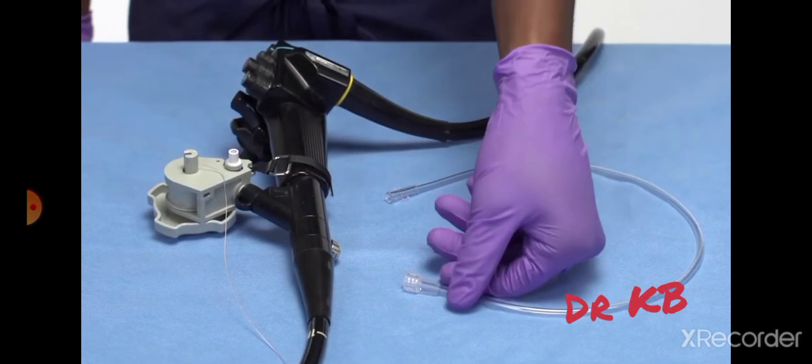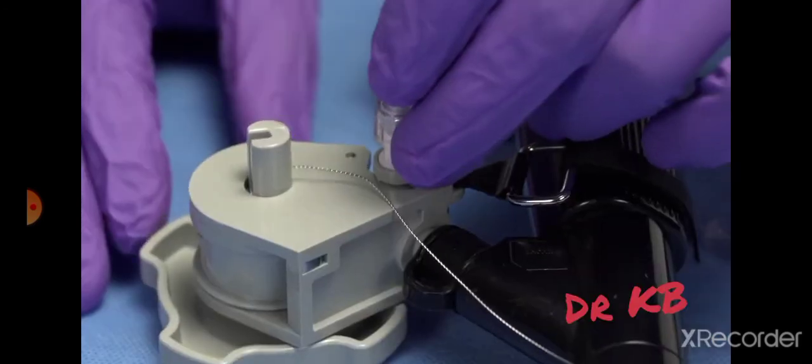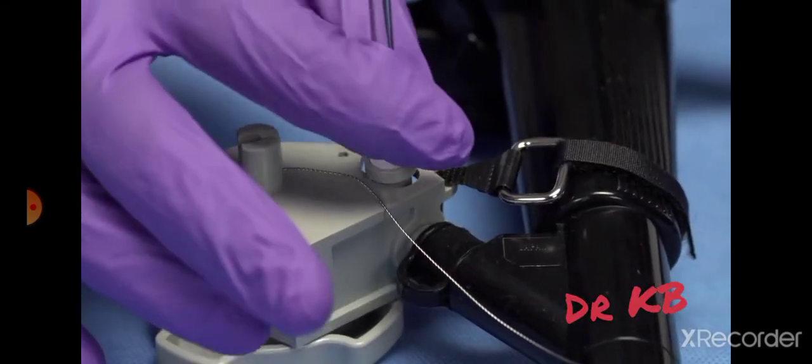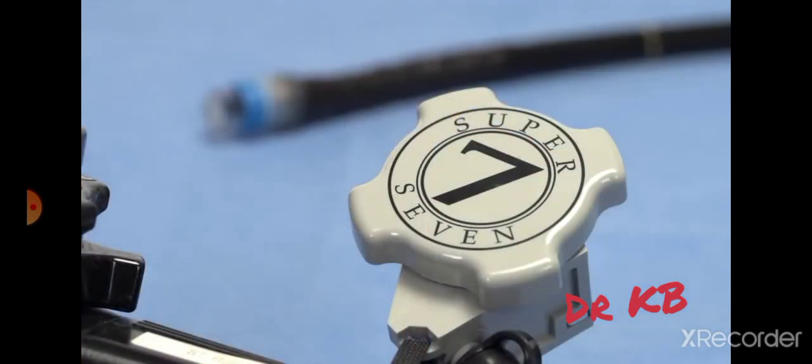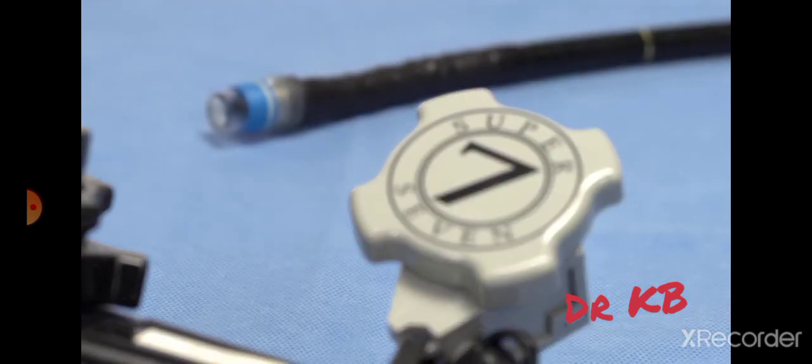For irrigation, attach a syringe or the irrigation tube provided to the luer fitting on the irrigation valve. The Speedband SuperView Super 7 device is now ready for use.